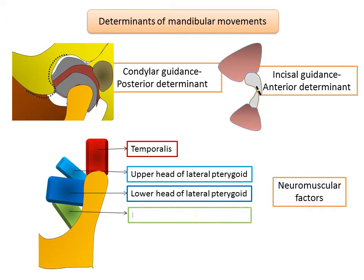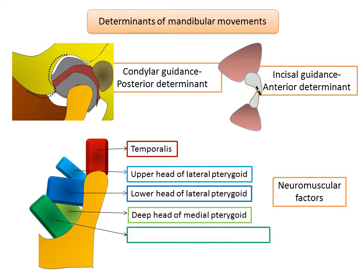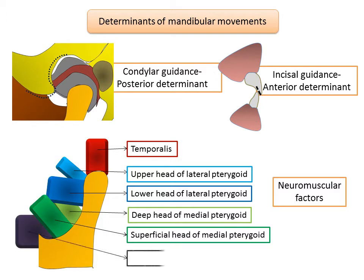The muscles of mastication are the temporalis, lateral pterygoid, medial pterygoid, and buccinator. The lateral pterygoid controls protrusion. The medial pterygoid and the masseter control lateral movements, and the temporalis controls retraction and closure of the mandible.